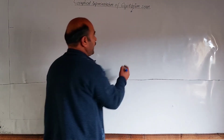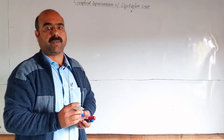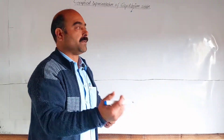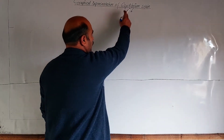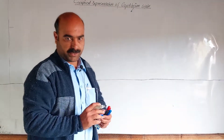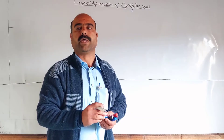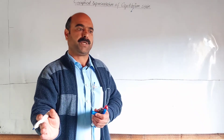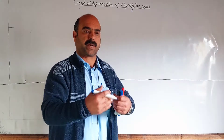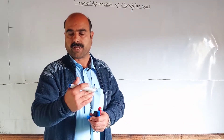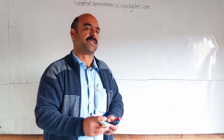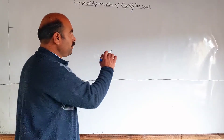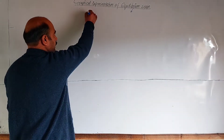The equilibrium state is the state of a reversible reaction during which the rate of the forward reaction becomes equal to the rate of the reverse reaction. This condition defines the equilibrium state.